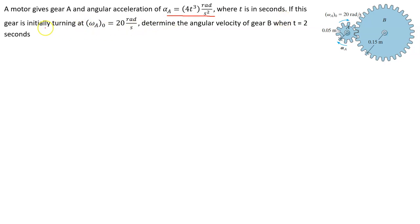If the gear is initially turning, they're giving us an initial angular velocity: the initial turning is 20 radians per second. So this gear had been spinning and we're starting the clock at 20 radians per second — that's for gear A. Determine the angular velocity of gear B when T is equal to 2 seconds. So we have an interval of time of 2 seconds.